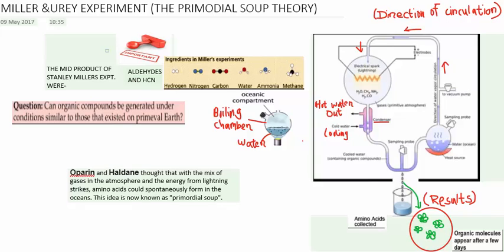Oparin and Haldane thought that the mix of gases in the atmosphere - nitrogen, carbon, hydrogen, ammonia, methane - could give rise to amino acids. It is called soup as it is a mixture of things and organic compounds.